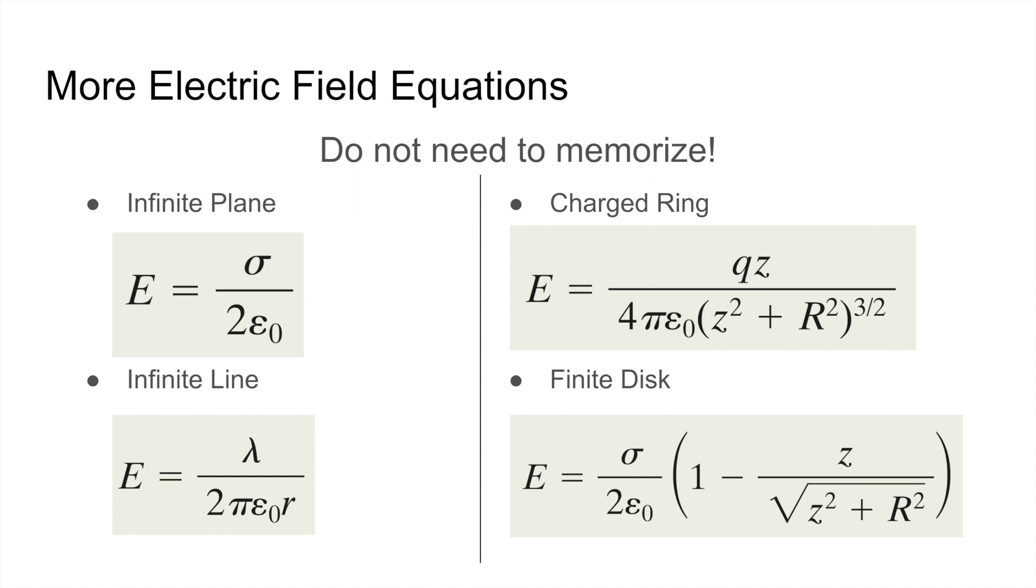For an infinite line, the electric field is given by lambda, or the linear charge density, which is the amount of charge per unit length, divided by 2π epsilon zero times the distance away from that line. You do not need to memorize the infinite plane equation and the infinite line equation, because although you'll need to integrate to find it using the electric field equations, you'll learn a formula in the next chapter that will help you derive this really quickly.